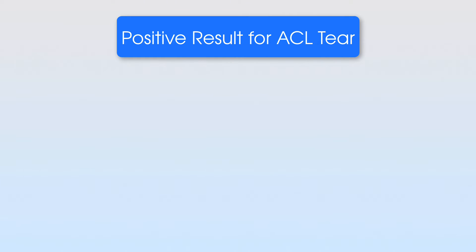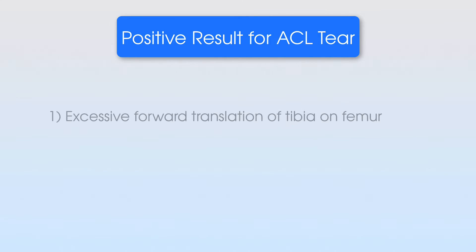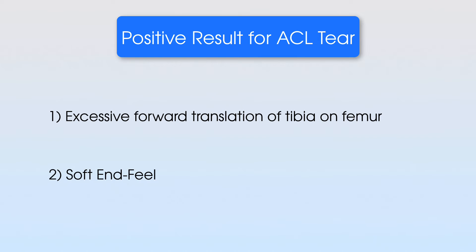So what are we looking for as a positive result? The first is an excessive forward translation of the tibia on the femur, suggesting the ACL is torn as it's not stopping the tibia from moving too far forward. The second, and crucial to note, is a soft end feel — meaning we do not have a feeling of a clear tug or end point when performing the test, because the ACL is torn and not restricting the tibia. We can only be sure of these things by comparing the injured leg to the non-injured leg.